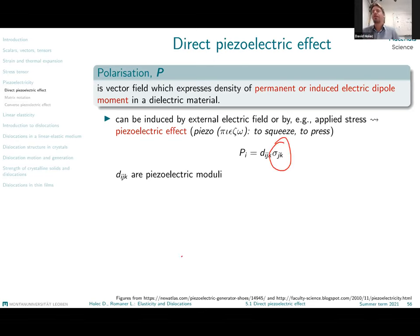So that means that you apply a certain stress, a certain deformation to your body, you deform it. And as a consequence of that, you generate polarization, you generate these electric dipoles, which are characterized at a given position in the space by a vector.